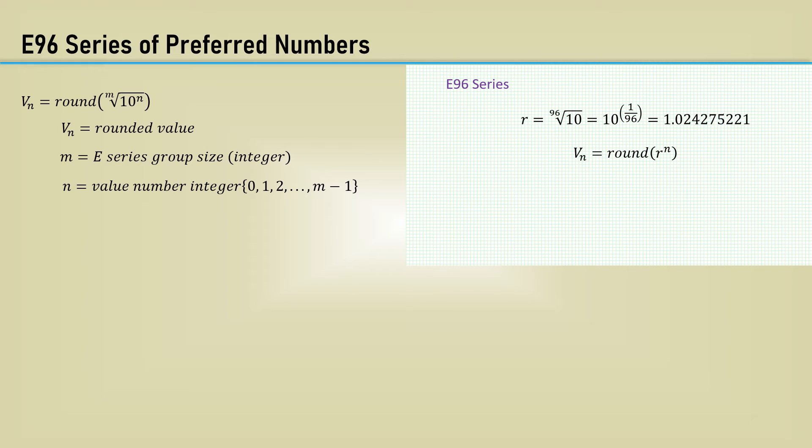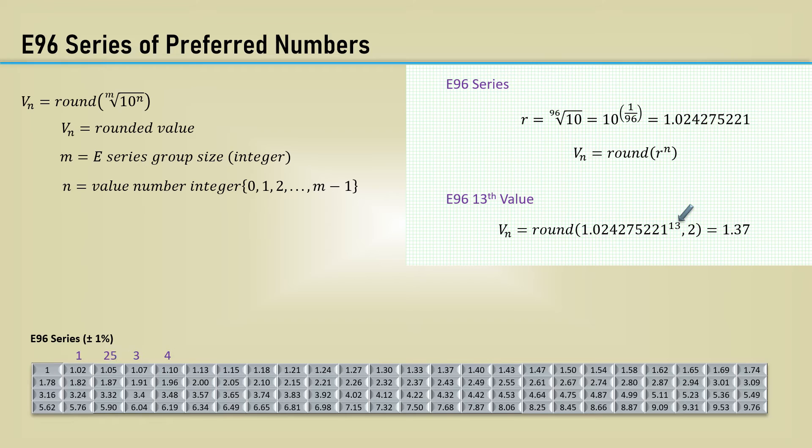The series value is that common ratio raised to the nth power rounded to two trailing digits. For example, to compute the 13th value in the series, raise the common ratio to the power of 13, and round to two trailing digits, which comes out to 1.37. Here it is in the chart as the 13th progression.